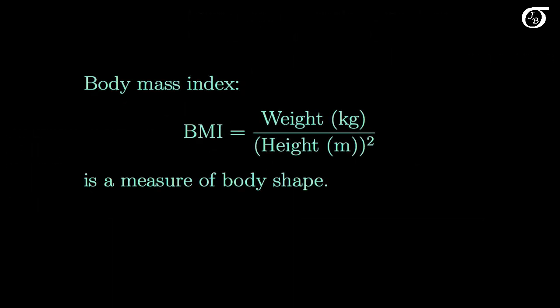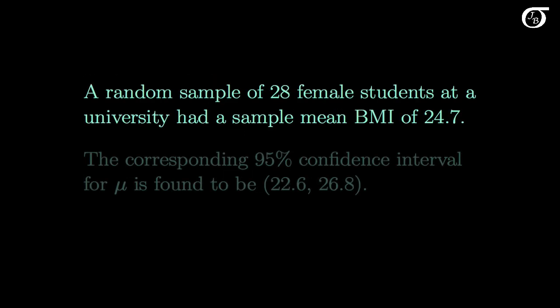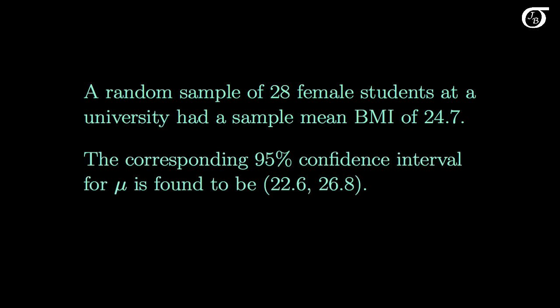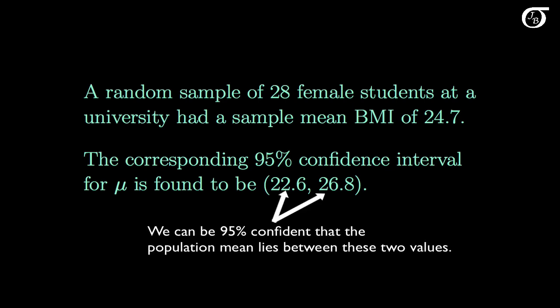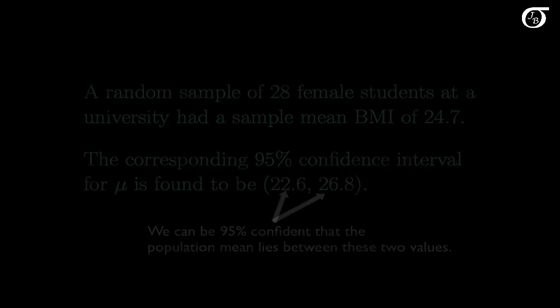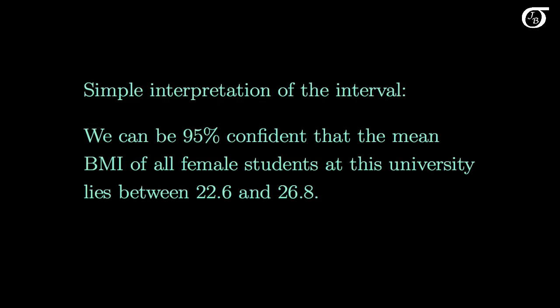Let's look at a practical example. Body mass index, which is a person's weight in kilograms divided by their height in meters squared, is a measure of body shape. A random sample of 28 female students at a university had a sample mean body mass index of 24.7, and suppose the corresponding 95% confidence interval for mu is found to be 22.6 to 26.8. A simple interpretation of this interval is that we can be 95% confident that the mean body mass index of all female students at this university lies between 22.6 and 26.8.